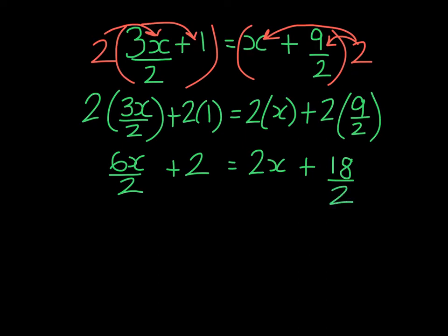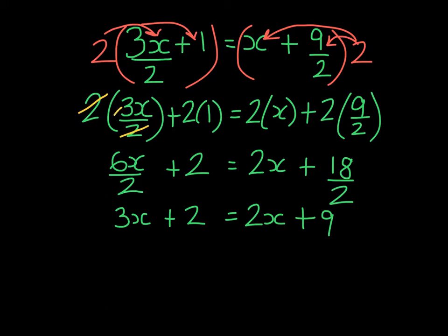6x over 2 becomes 3x. We have the 2. 2x is the same. And 18 over 2 is 9. On the left-hand side, we could have done a bit of simplifying to avoid all of these steps — 2 and 2 could have simplified and we could have gotten 3x directly. And on the right-hand side, the same thing with the 9 halves: we could have simplified 2 and 2 and gotten 9.